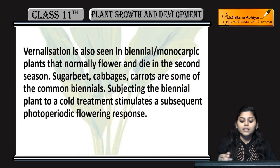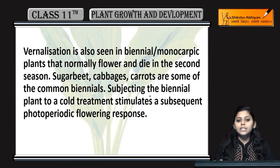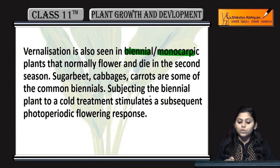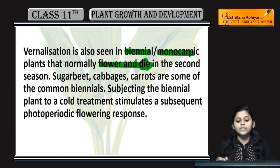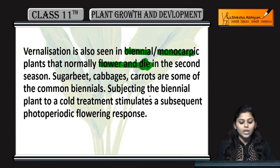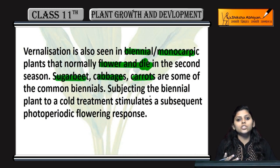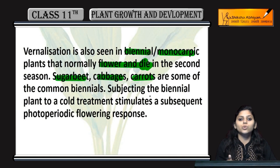Vernalization is seen in biennial and monocarpic plants, which are normally flowering in one season and dying in another season. Sugar beet, cabbage, and carrots are some examples of biennial or monocarpic plants.